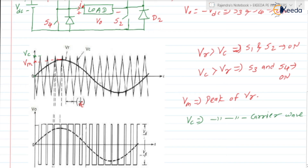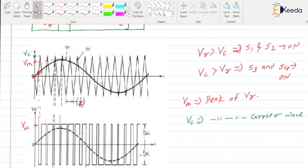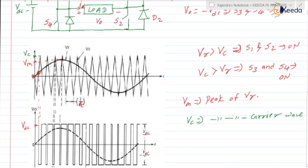From this instant to this instant, the magnitude of VR is greater than VC, so S1 and S2 will be in the on state and the output will be equal to VDC. That is why the output voltage is VDC. When VC is less than VR, S1 and S2 are turned on and output voltage equals VDC.